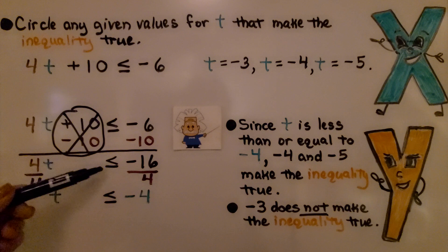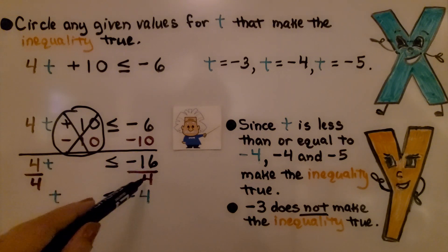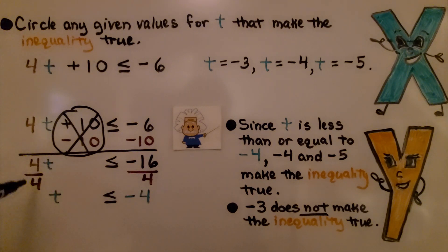With 4t is less than or equal to negative 16, we divide each side by this coefficient 4. Since 4t means 4 multiplied by some unknown number t, and that's multiplication, our inverse operation is going to be division. We do 4 divided by 4 and negative 16 divided by 4, same numerator and denominator.